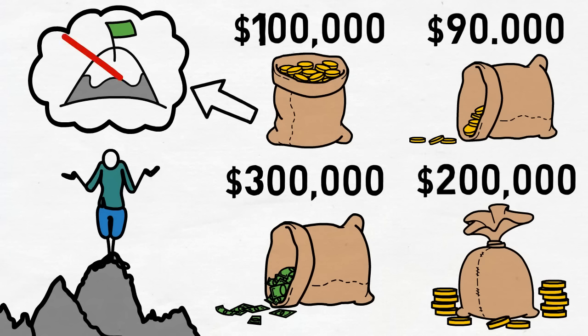So if you ignored the goal completely and just focused on the system, would you still get results? Obviously, yes. If you have a good money making system, you're going to get to those $100,000 either way, whether you have that specific goal or not.